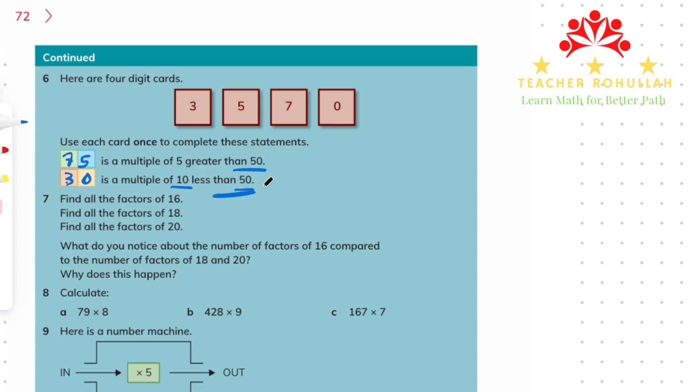In question 7 it says find all the factors of 16, find all the factors of 18, and find all the factors of 20. Factors, you know, are the numbers that are multiplied together to get a product. Now we have the products, we have 16, 18, and 20, and we have to find what numbers multiplied together give us these numbers.